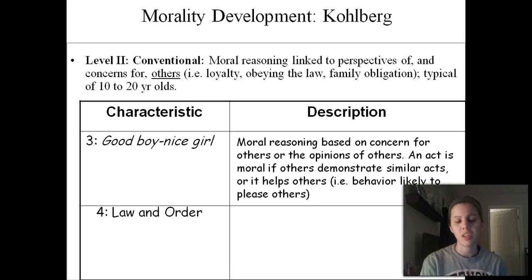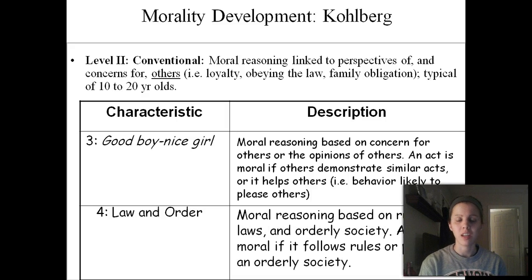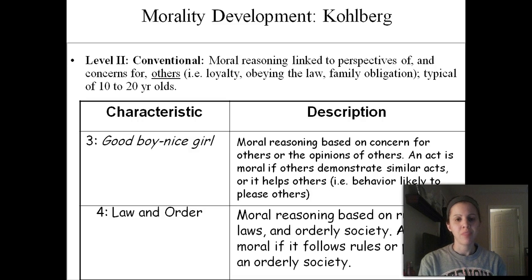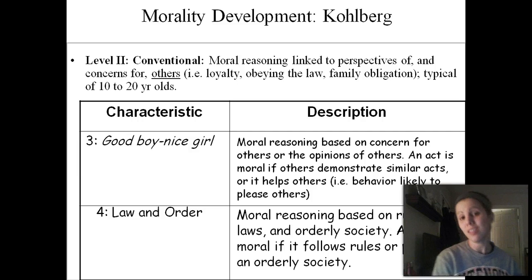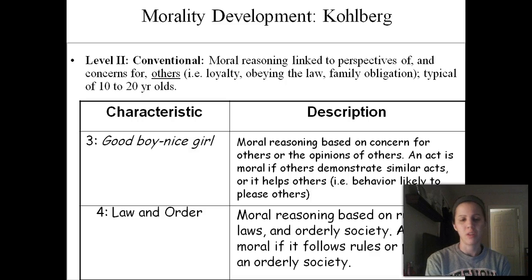The second characteristic of the conventional stage is called law and order, meaning your morals are based on whatever the law is. The school has a policy against plagiarism, so if you value that law just because it's a law, you won't cheat. Another example: during the time of slavery, many people in the North were against slavery but wouldn't help runaway slaves because it was against the law — even if their personal morals transcended it, they wouldn't act if it broke the law.